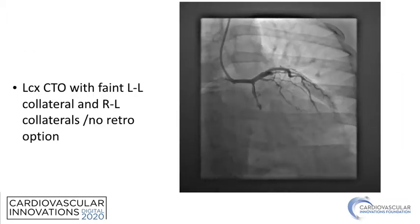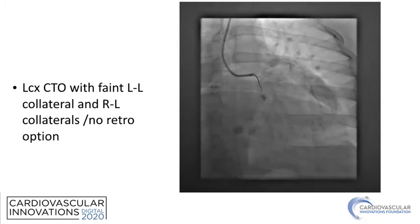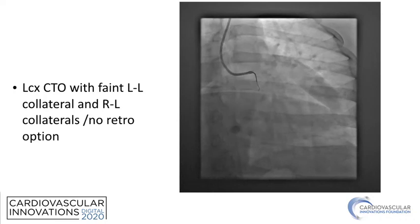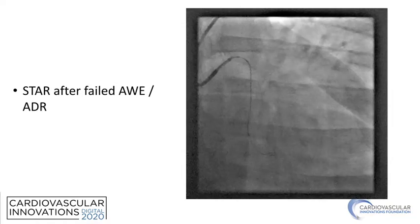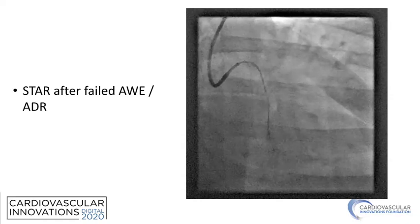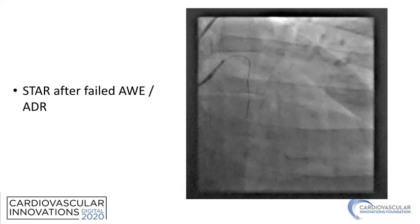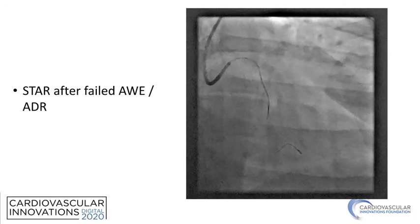Here is a case of a circumflex CTO, relatively short, with a single OM outflow, no interventional collaterals, and a relatively small vessel. After spending some time trying to wire this, the wire ended up in the sub-intimal space. Stingray was not successful, so the decision was made to proceed with STAR. You can see the knuckle advancing in the OM, re-entering the true lumen in the mid portion, as evidenced by the abrupt change in caliber of the knuckle.